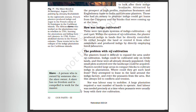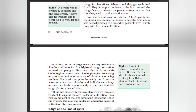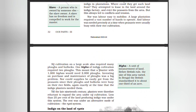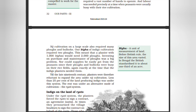Planters attempted to lease in the land around the indigo factory and evict peasants from the area, but this always led to conflicts and tension. Labor was also difficult to mobilize — a large plantation required a vast number of hands, and labor was needed precisely at the time when peasants were busy with their rice cultivation. Nij cultivation on a large scale also required many ploughs and bullocks: one bigha of indigo cultivation required two ploughs. A planter with a thousand bighas would need two thousand ploughs. Investing in and maintaining ploughs was a big problem. Till the late 19th century, planters were therefore reluctant to expand nij cultivation — less than 25% of the land producing indigo was under this system.